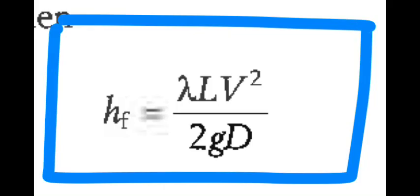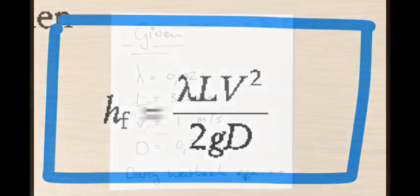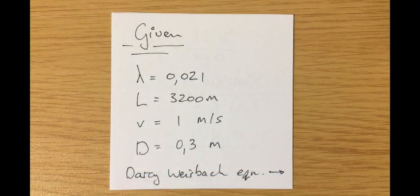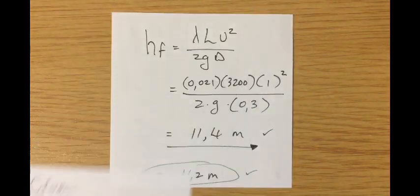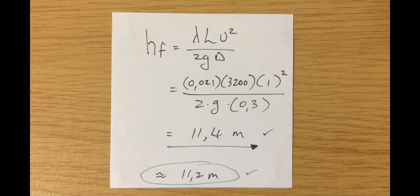So with lambda known we can use the Darcy-Weisbach equation directly to solve for the known values. The friction head loss is easily found as 11.4 meters which compares quite well with the 11.2 found earlier.